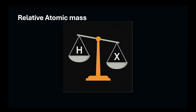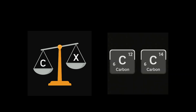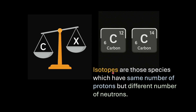Other elements were assigned masses relative to hydrogen. The current system of atomic masses is based on carbon as the reference — specifically the carbon-12 isotope, and not the carbon-14 isotope. Let's quickly revise what isotopes are. Isotopes are species that have the same number of protons (same atomic number) but a different number of neutrons, meaning the mass number is different.